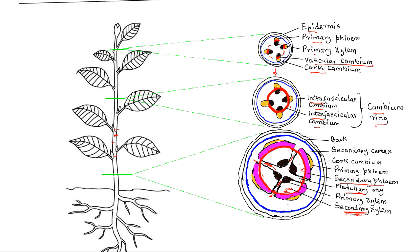In order to accommodate the secondary xylem, secondary phloem, and parenchyma tissues, the cork cambium also undergoes mitotic division. On the inner side it gives rise to the secondary cortex, while on the outer side it gives rise to cork cells.